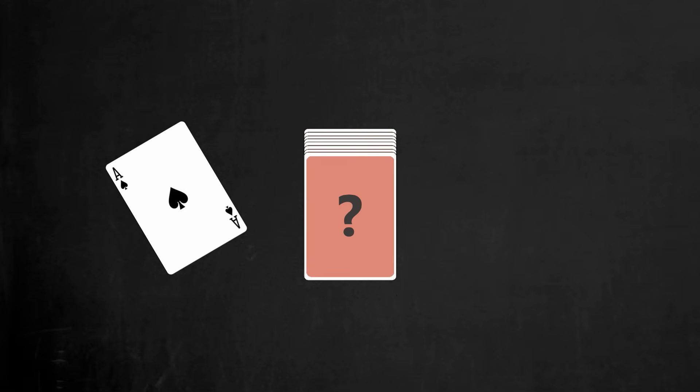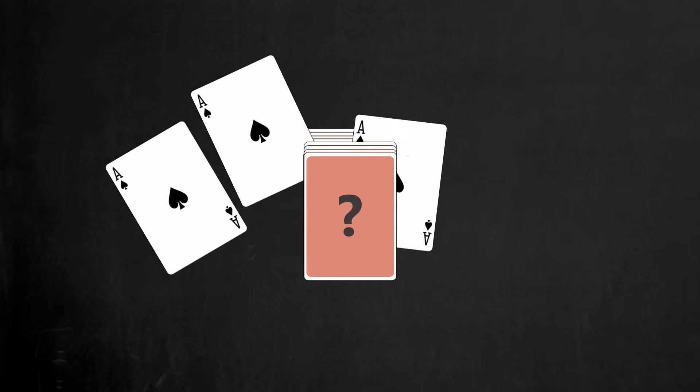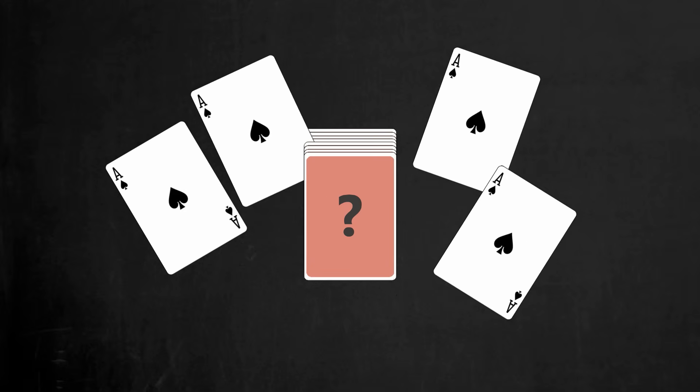However, if this deck of cards happen to be made up of only Aces of Spades, the probability of drawing an Ace of Spades is actually 52 of 52, or 100%. Your probability assessment does not necessarily reflect the actual probability because it is based on your own state of knowledge.